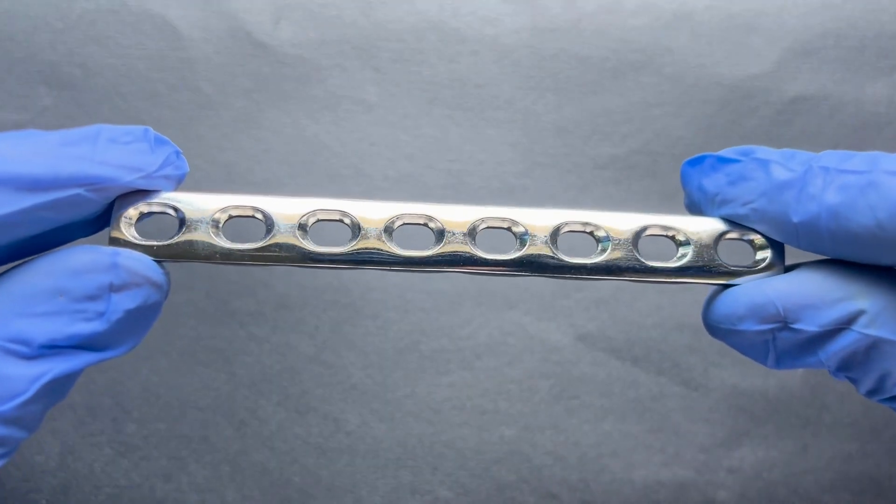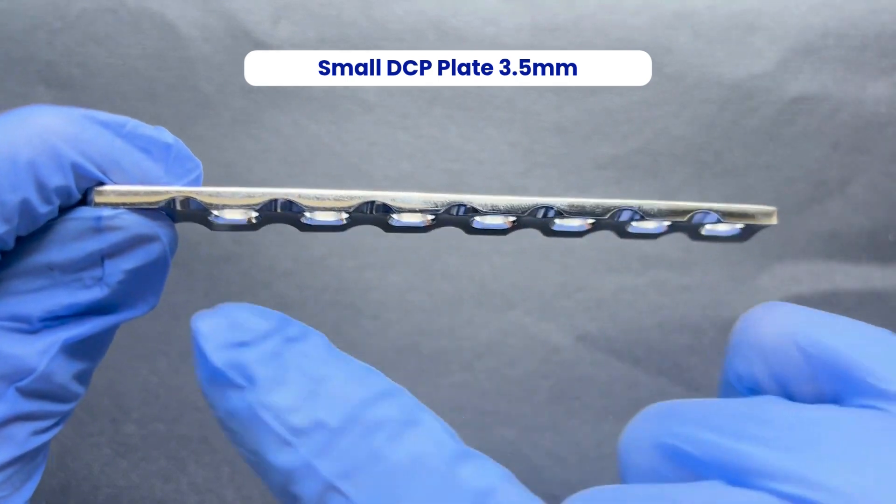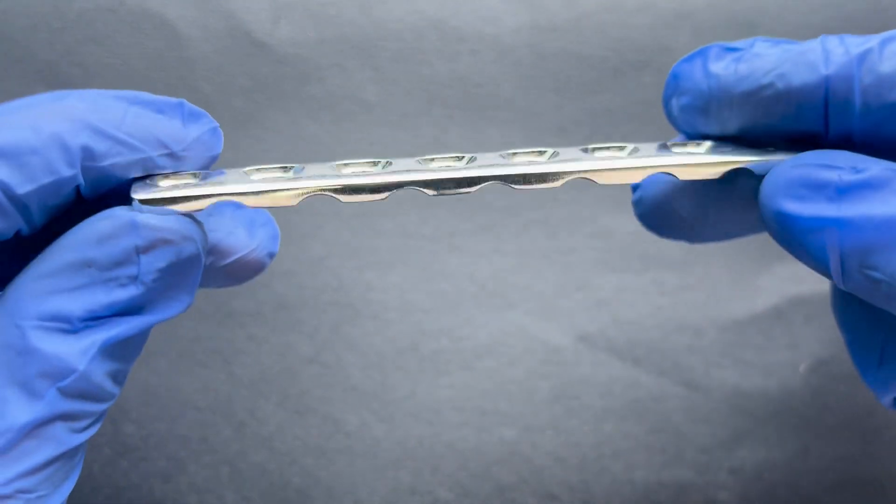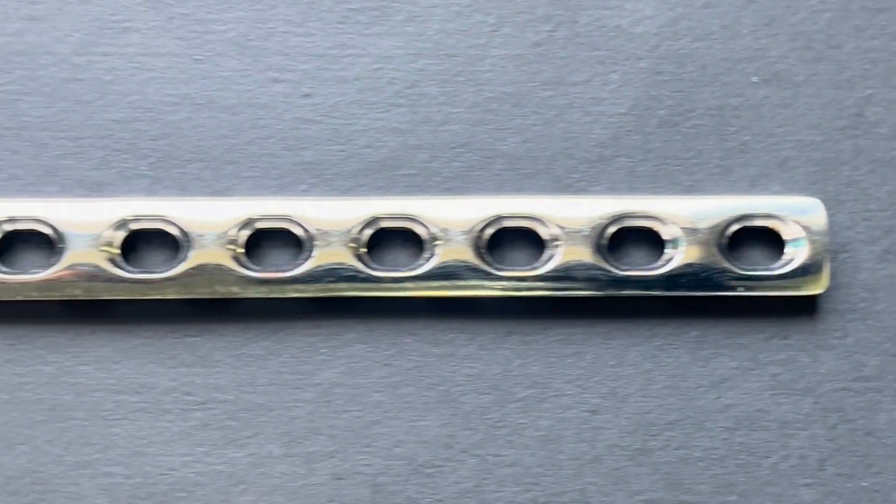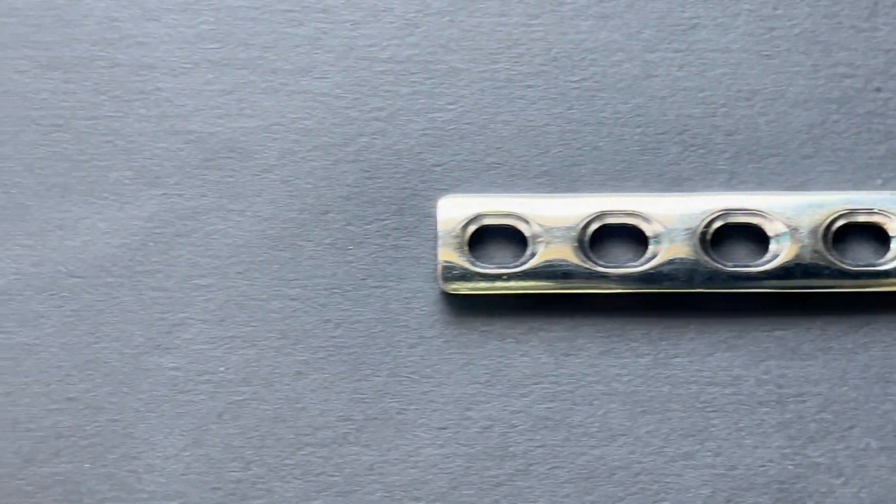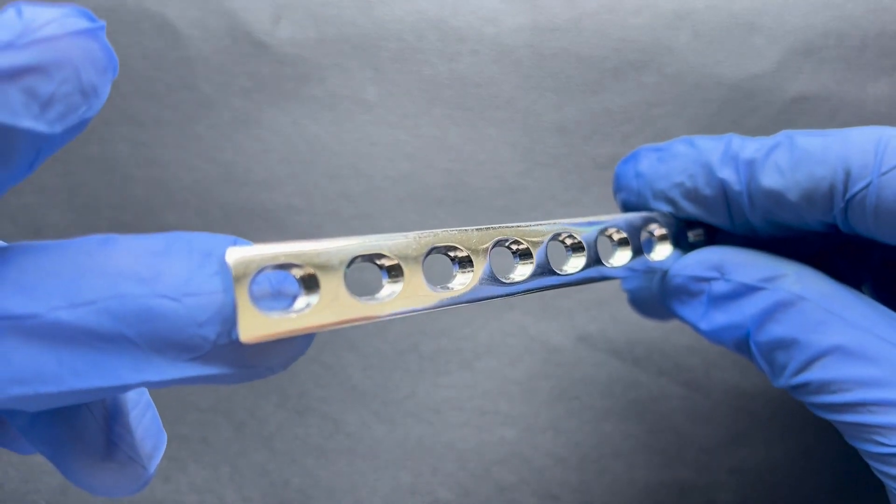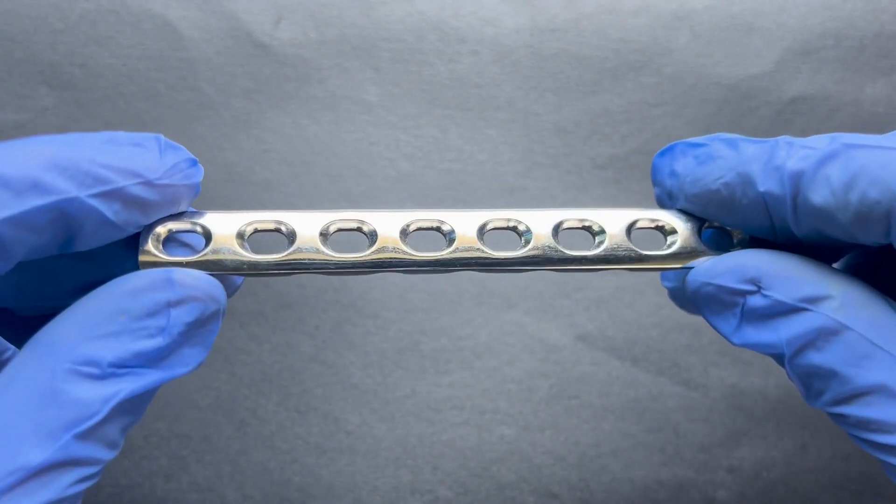Lastly, we have the small DCP plate, 3.5mm. It offers straightforward dynamic compression for various fracture patterns in smaller bone segments. Its design ensures reliable interfragmentary compression and stable fixation.